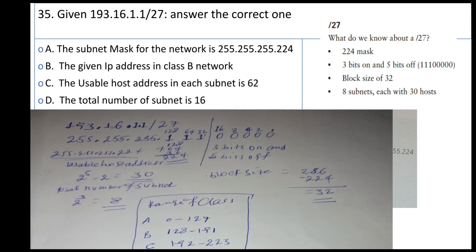What do we know about a /27 network? The subnet mask 255.255.255.224 means we have three bits on and five bits off in the host portion.